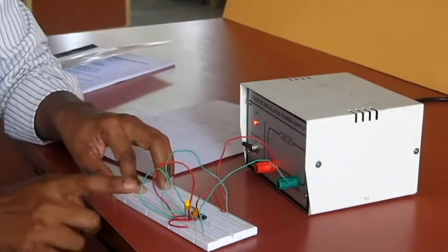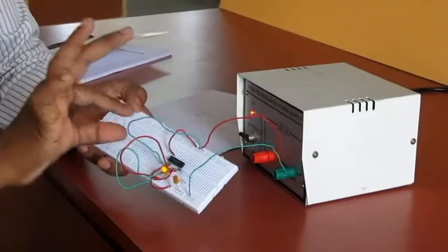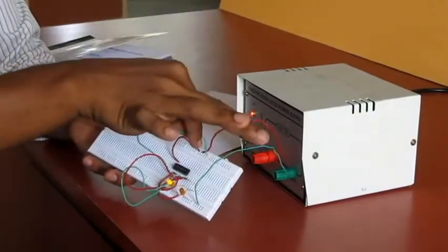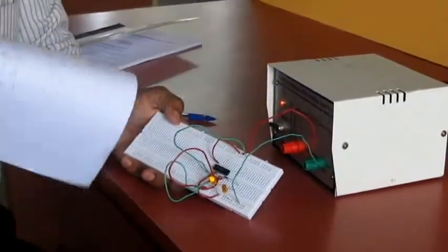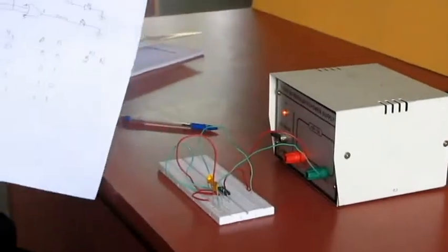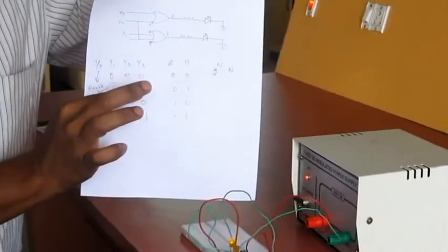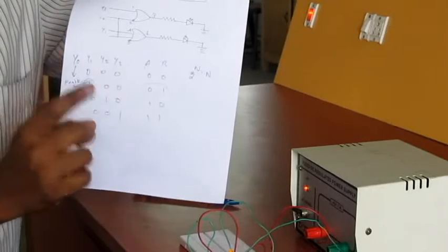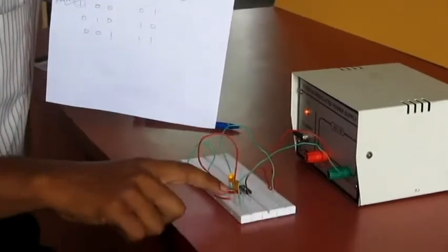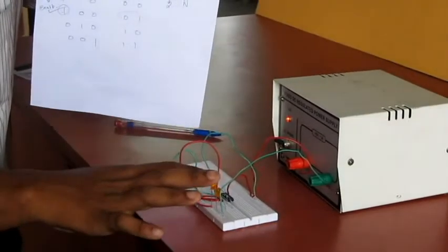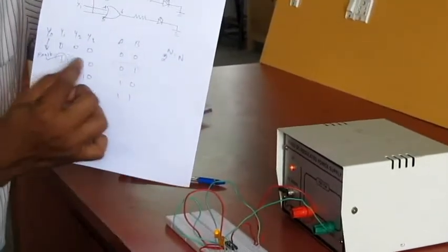So when you apply 2 inputs to the ground which means 0, 0 and I enable only 1 input to the VCC line, which means your input now is Y1 equal to 1, Y2, Y3 are 0, 0. So corresponding 1, 0, 0 I should produce a code 01. So now you can see this LED doesn't glow which means it shows that it is 0 and this LED is glowing and this is actually 1. So we will receive 01 unique code for this corresponding number.